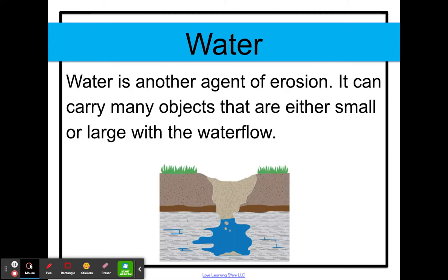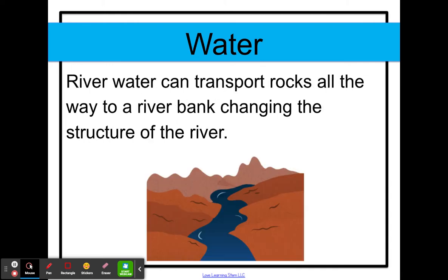Second, water is another agent of erosion. It can carry many objects that are either small or large with the water flow. River water, for example, can transport rocks all the way down to a river bank, changing the structure of the river.